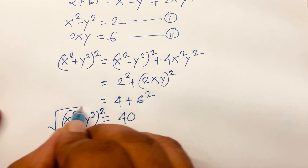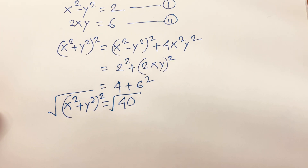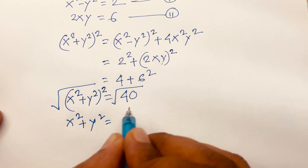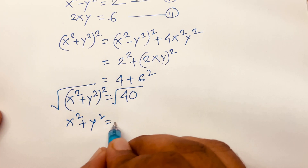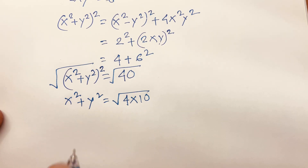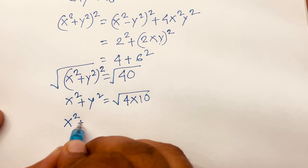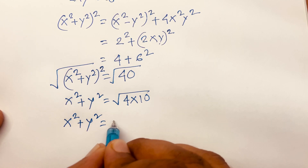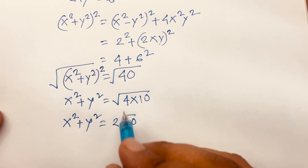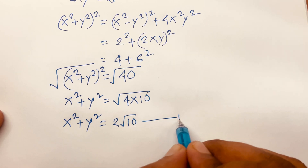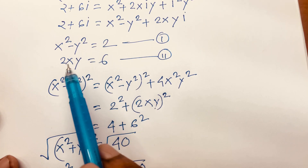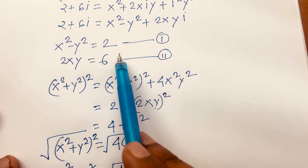Taking the square root of both sides, x² + y² = √40 = √(4 × 10) = 2√10. This is our third equation.